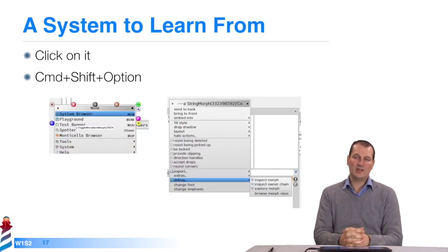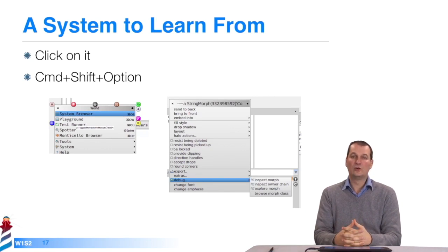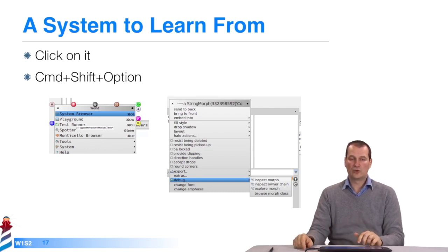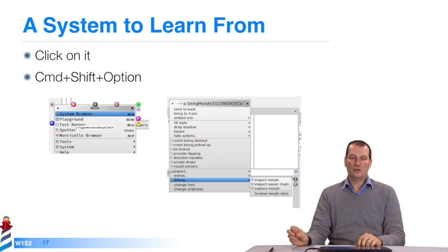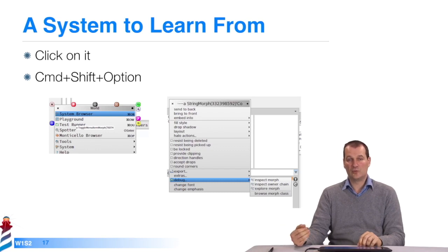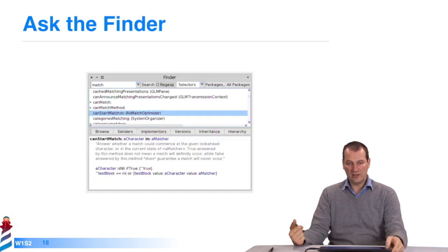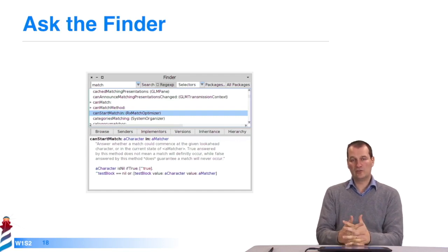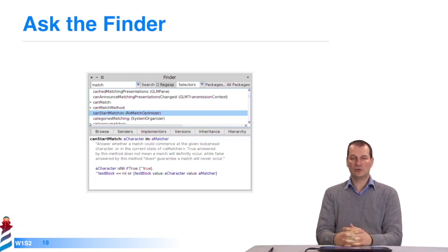I told you that Pharo is a system to learn from. I'll give you a few illustrations — we'll see them again in the videos. Every graphic element of Pharo that you click on with Command plus Shift plus Option will give you a little menu around the graphic element. By using these menus you can go directly inside and manipulate the visual elements you're dealing with. We'll show you what an inspector is — an object that lets you manipulate the properties of other objects and start to implement them. We also have an object called a Finder, so I can ask the Finder to find all the system's methods that contain the word match. It shows me a list and I can access the method's code directly.